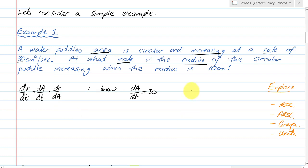Now I don't know dr/da initially, but I do know it's a circular puddle and the area of a circle is πr². Which means that da/dr equals 2πr, and therefore dr/da equals 1 over 2πr because I've just reciprocated. So dr/dt becomes 30 times 1 over 2πr, and I can write that down as 15 over πr.